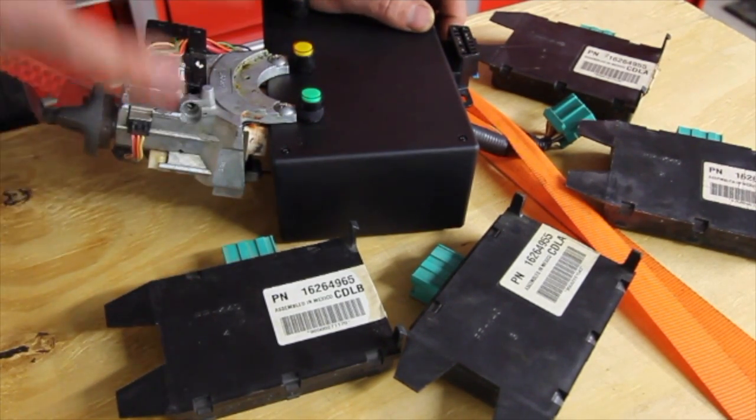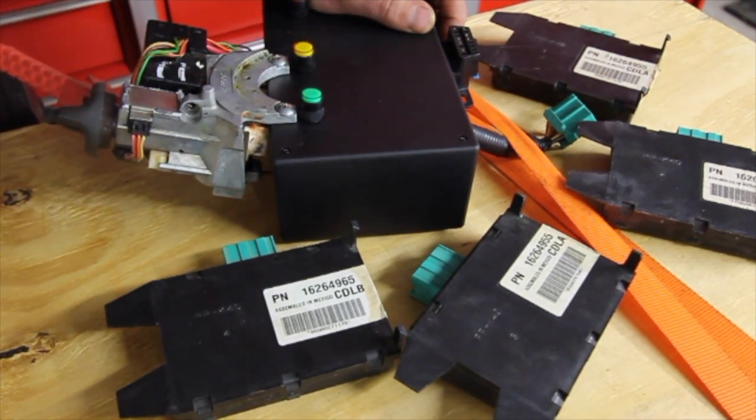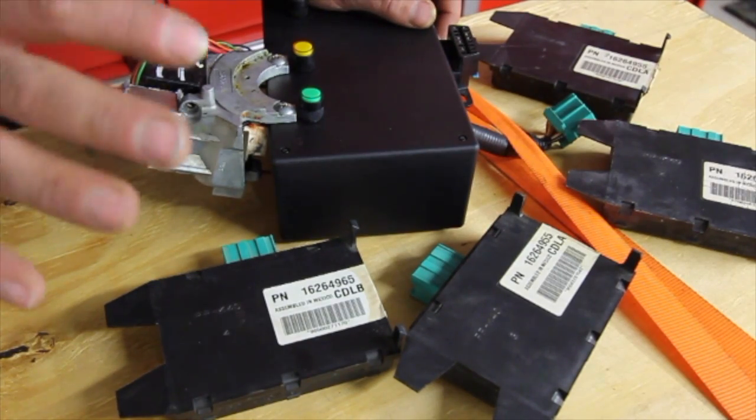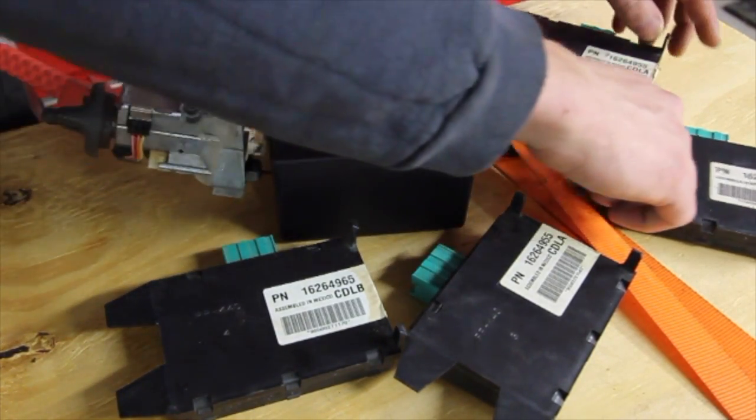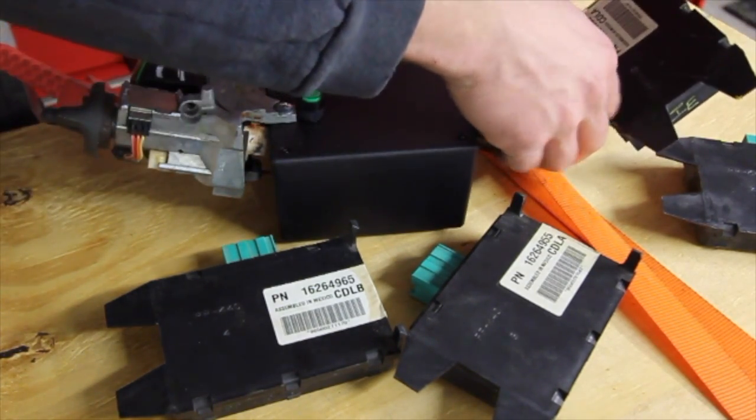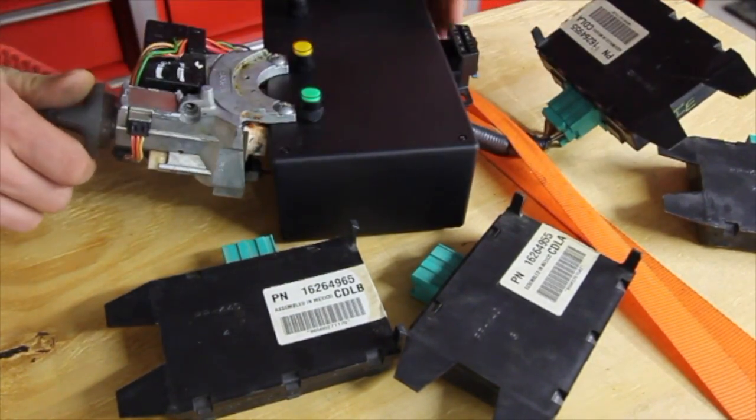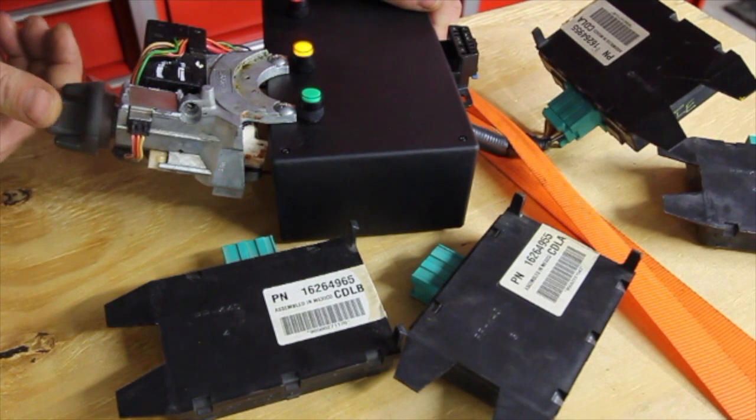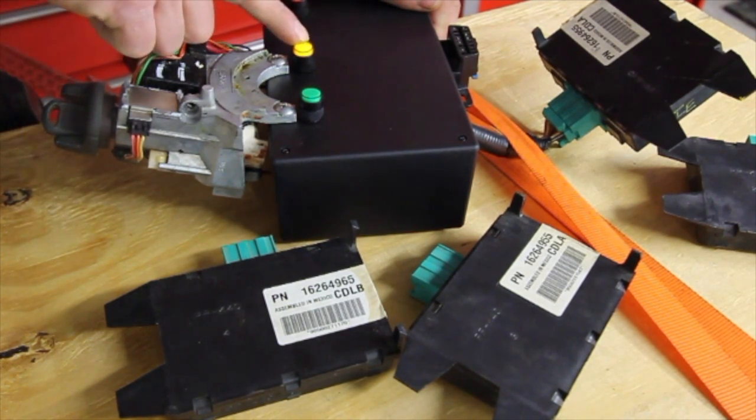I'm going to show you how we test these. I built this testing rig. It probably took more time than it's worth, but I wanted to guarantee what we sell. So, we have a pass lock module here. We're going to plug it in like this. Now, we're going to key on. Now, you notice this yellow light stays on.